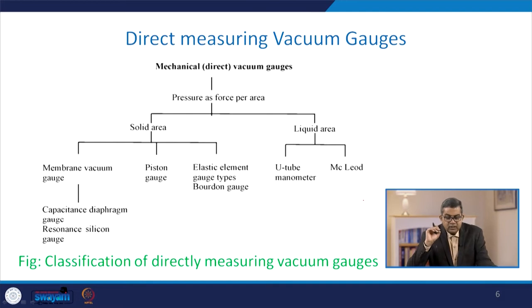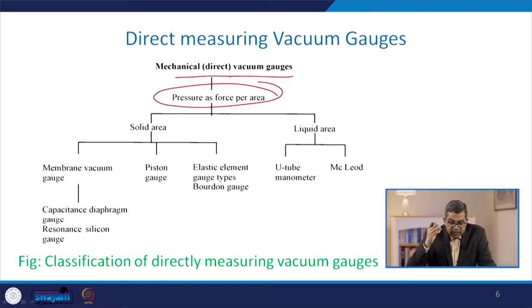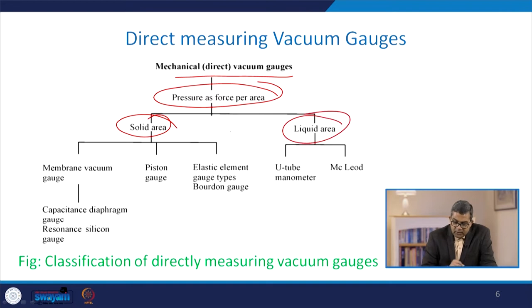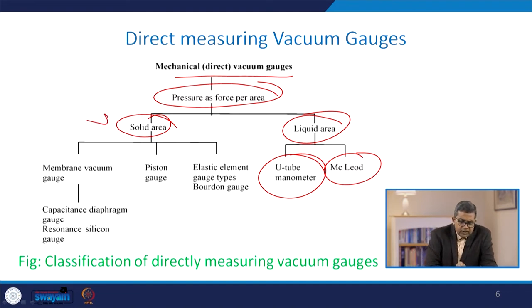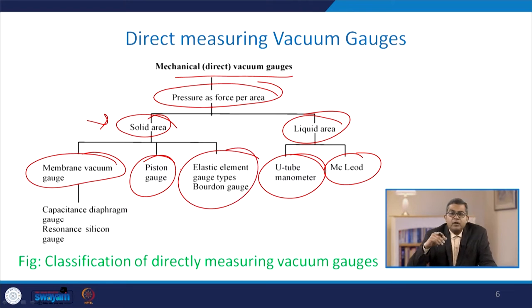Mechanical or direct vacuum gauges represent pressure as force per area and can be subdivided into two categories: liquid area and solid area. In the liquid area, there are the U-tube manometer and the Macleod gauge. In the solid area, there are the membrane vacuum gauge, the piston gauge, and the elastic element gauge type or Bourdon gauges. The membrane vacuum gauge is also referred to as the capacitance diaphragm gauge or resonance silicon gauge.